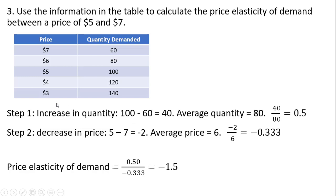If you wanted to, you could have reversed this — instead of labeling it an increase in quantity, you could label it a decrease in quantity. You would have had minus 40 for the quantity change, and then an increase in price of plus 2. It doesn't really matter whether the minus sign shows up here; you get the same result. Either way, the answer is minus 1.5.